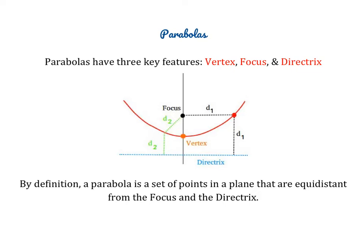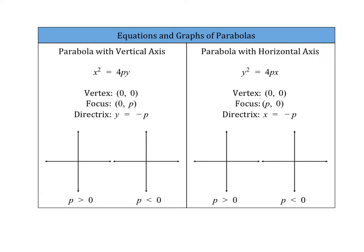We're still working with the vertex, but now we're going to be more focused on the directrix and the focus, and that means our standard form of the equation is going to look a little different. For a parabola with a vertical axis, the form is x² = 4py. By definition, if you have it in this form, the focus is at (0, p), and the directrix is at y = −p.